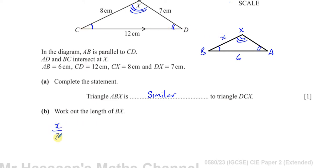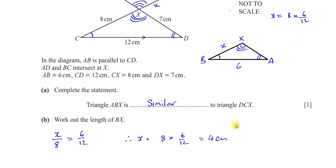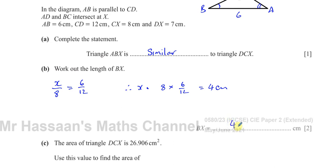To work out BX, I use the ratio of sides: X over 8 equals 6 over 12. Therefore X equals 8 times 6 over 12, which is 4 centimeters. You could also see this simply by noting the ratio of sides is 2 to 1, meaning the smaller triangle's lengths are half those of the bigger. Either way, BX equals 4 centimeters.